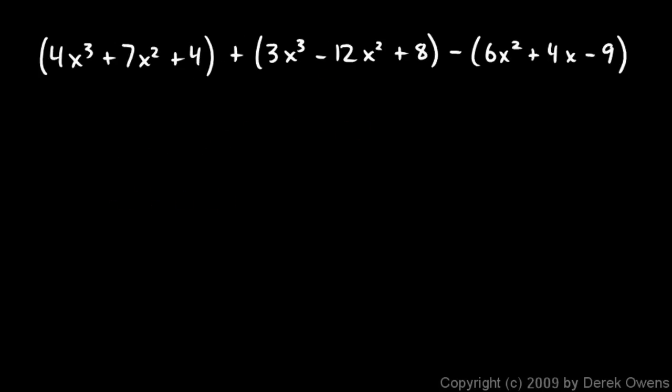And here's a problem that involves three polynomials. I have this one plus this one minus this one. So this addition here is no problem. All of those terms aren't going to change. I'm just going to have the 4x³ + 7x² + 4 + the 3x³ - the 12x² + 8. But over here, this minus sign is going to change the sign of each of those. So I'm going to have a -6x² - 4x and a +9.